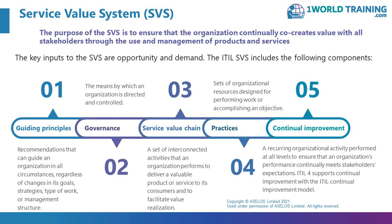Then there's governance — the means by which an organization is directed and controlled, which consists of evaluate, direct, and monitor. You evaluate to understand and make decisions about what you want to be and what you want to do; direct management so they know what is expected of them; and monitor to make sure you're getting what you expected and to close the feedback loop. The service value chain is a set of interconnected activities that an organization performs to deliver a valuable product or service. I like to think of it as archetypal activities — a specific set of six activities that work together, with value streams laid on top.